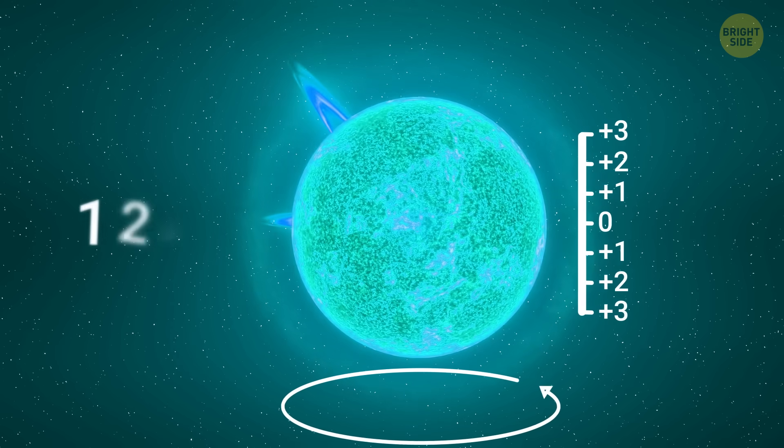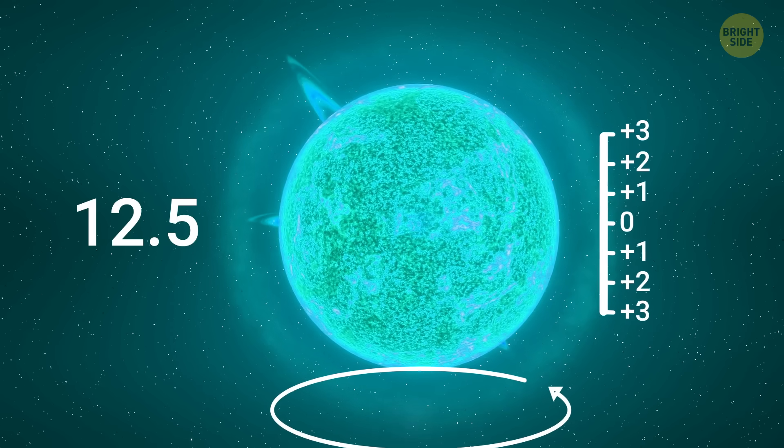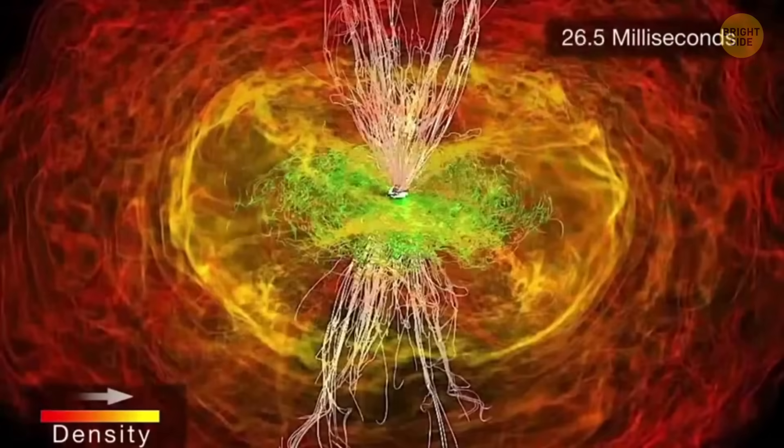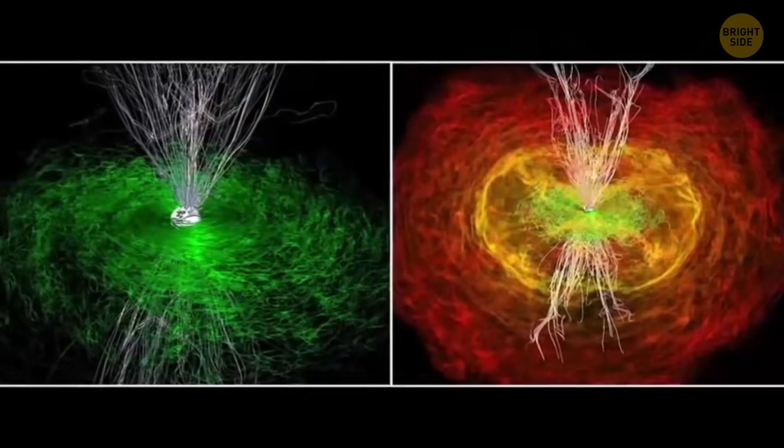The star rotates every 12.5 hours and is at 90% of its critical rotation speed. That's the velocity at which an object can tear itself apart.